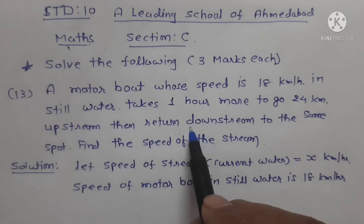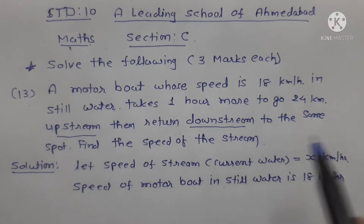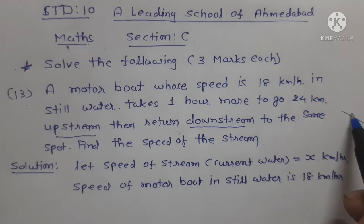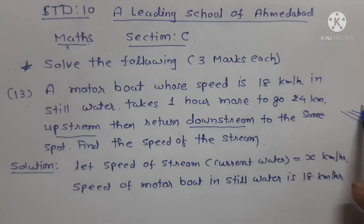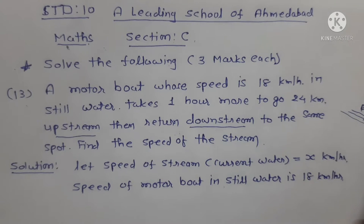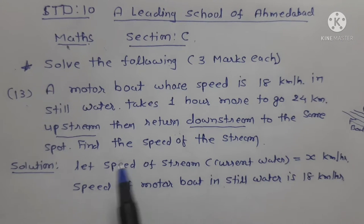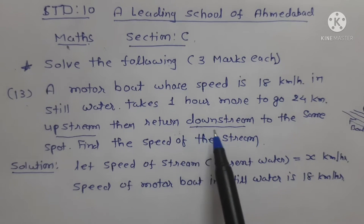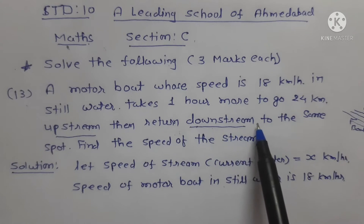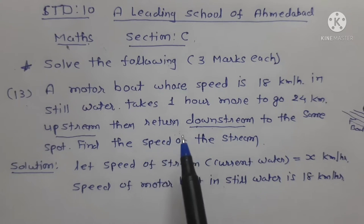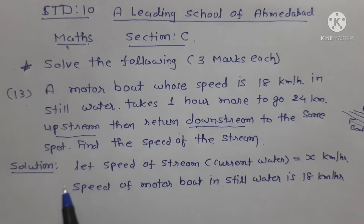In downstream, the speed of the boat plus river will be combined. In upstream, the speed of the boat will be reduced by the stream. Downstream means the direction towards the stream. Upstream means the opposite side of the stream. Now we start the solution.